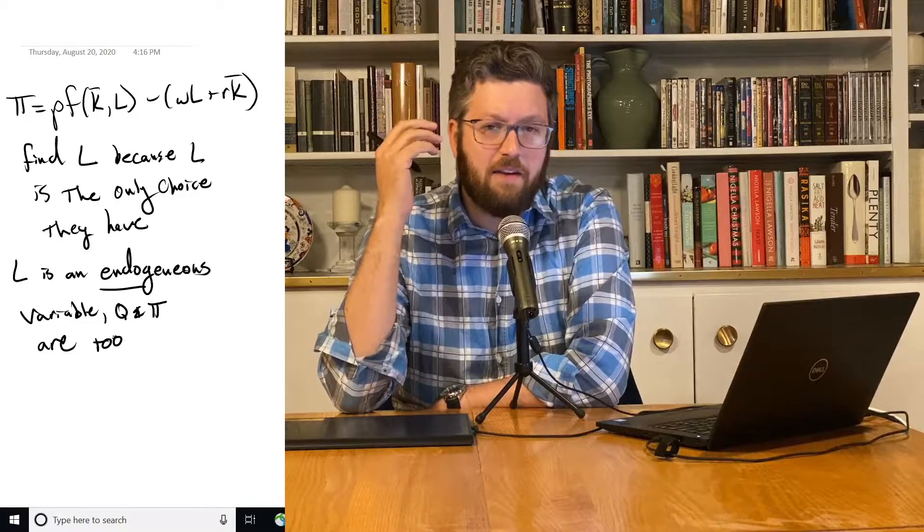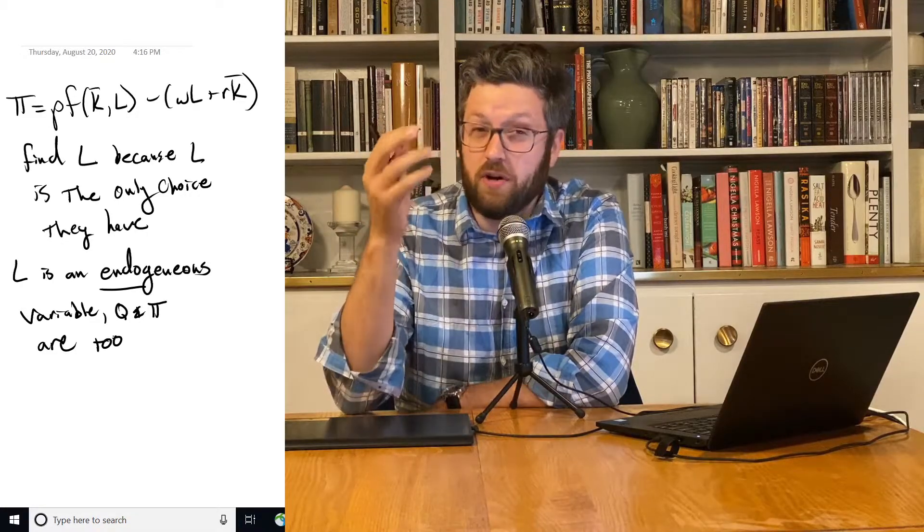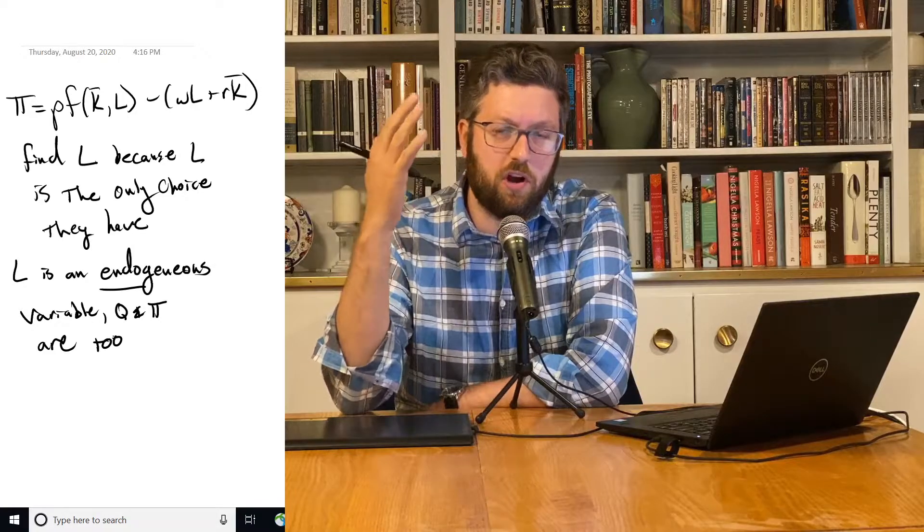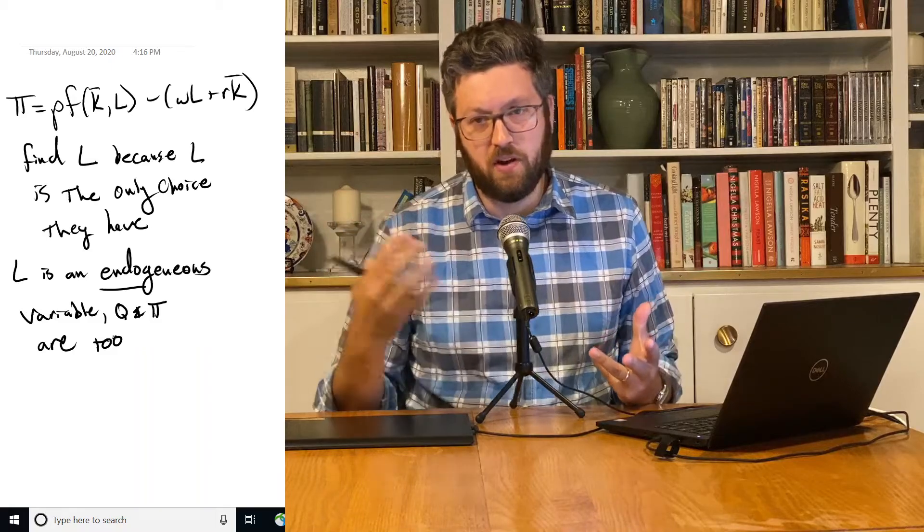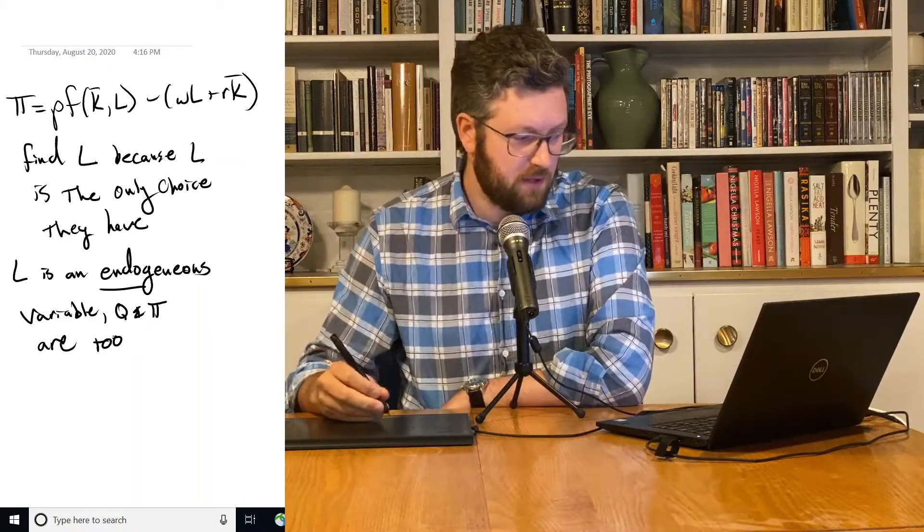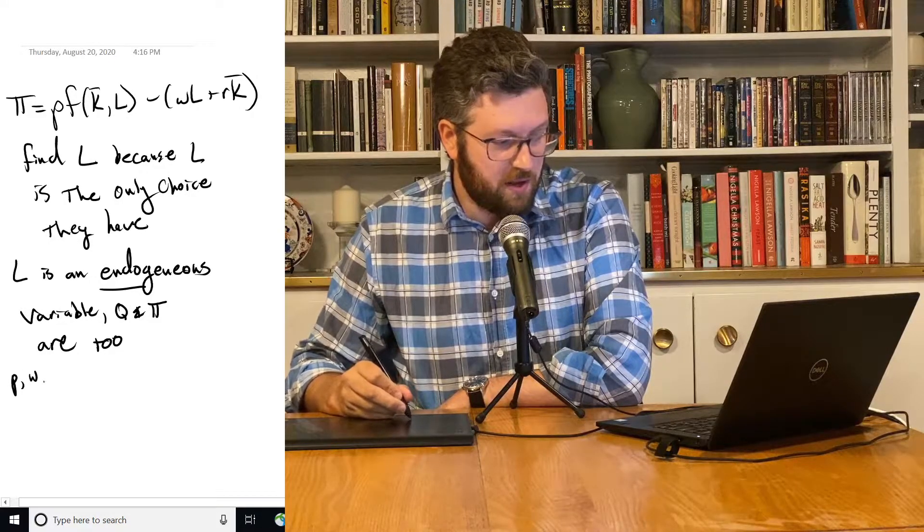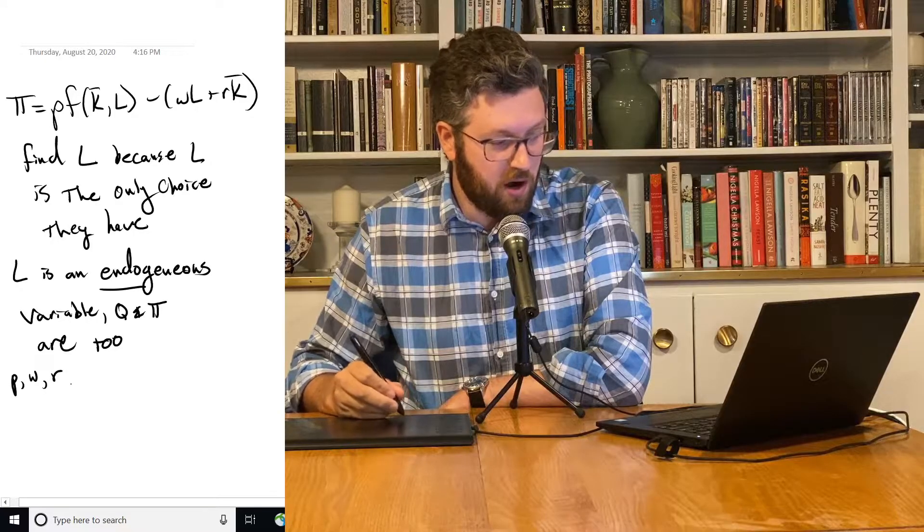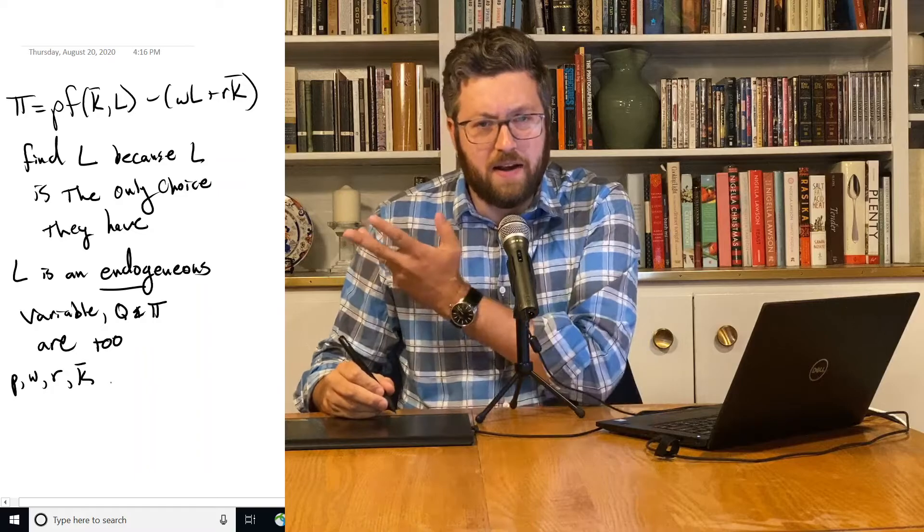It means it's a variable that we have to find. It's like a choice variable, and we have to use our model and our assumptions about how people behave to figure out what it is. All the other variables in this problem, which include the price P, the wage rate W, the rental rate R, but also in this case the capital stock K, are not endogenous.